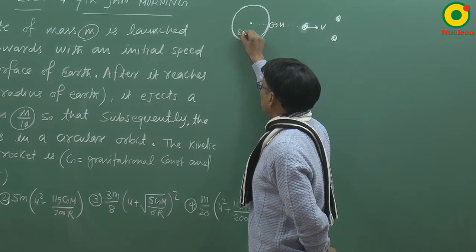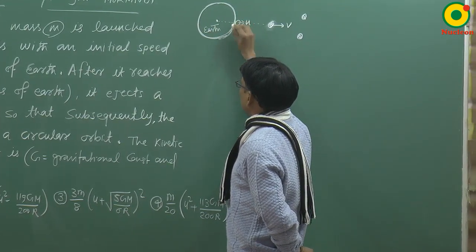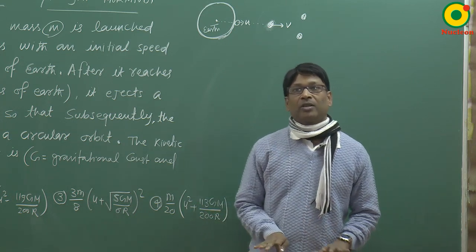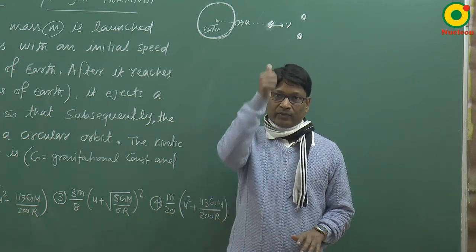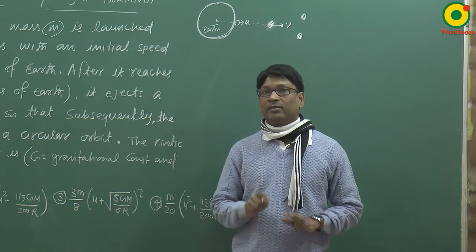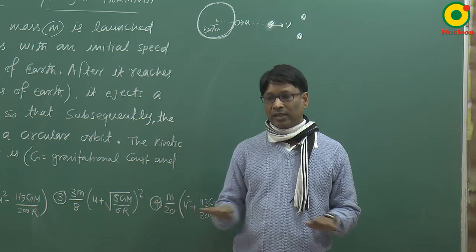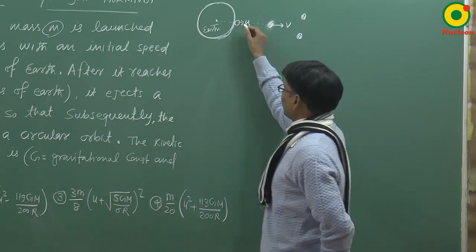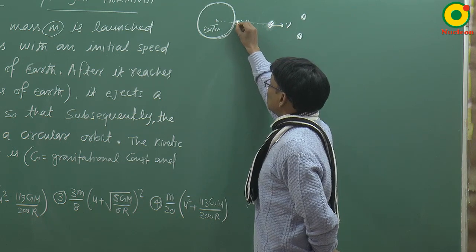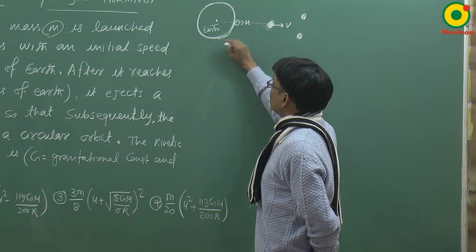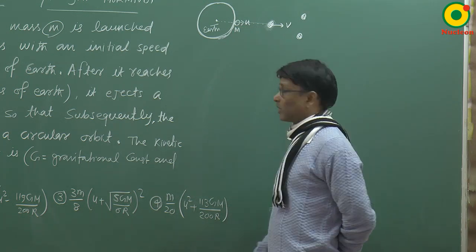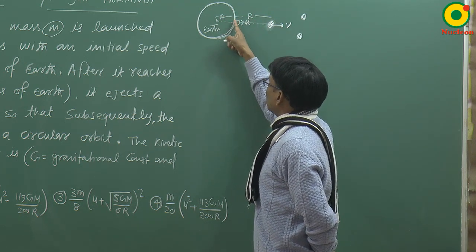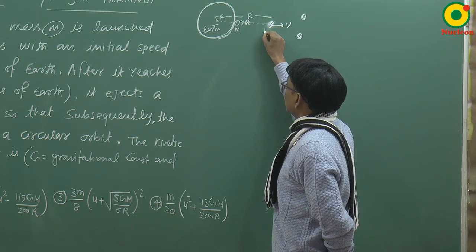I have made a diagram — this sphere represents the Earth. The satellite moves in the vertical, that is, the radial direction from the surface. At the surface, the satellite has initial velocity U in the vertical/radial direction. When it reaches height R (the radius of the Earth), the distance from the centre is 2R. The satellite has mass M at this point.